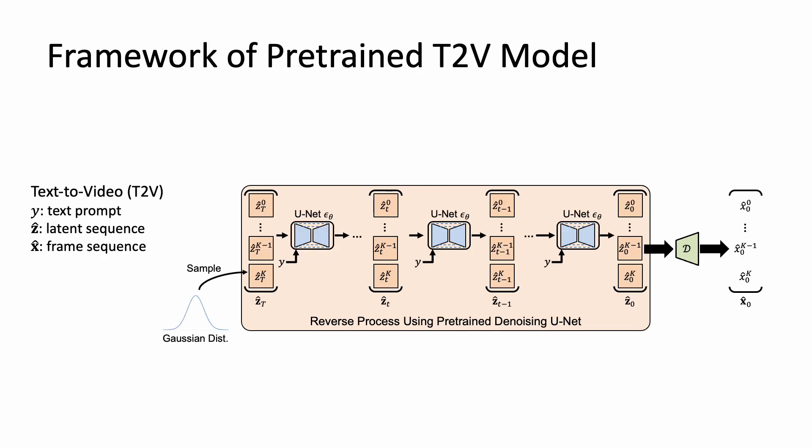We first introduce the framework of the pre-trained T2V model. We sample a Gaussian noise volume at ZT, then gradually remove the noise through the reverse process of the pre-trained denoising U-Net. To generate a clean latent sequence at Z0, we finally use a frame decoder to decode its latent frame to form the video at X0.